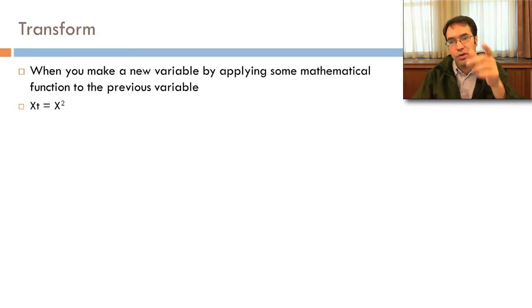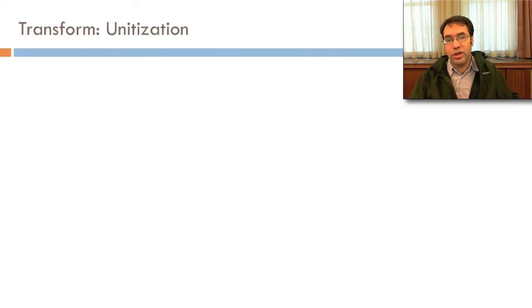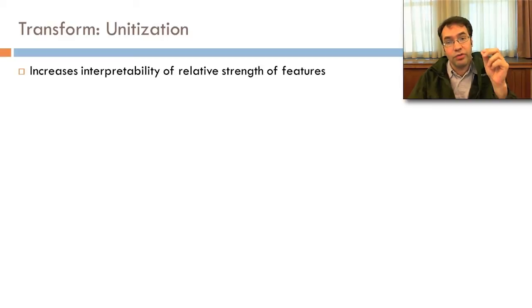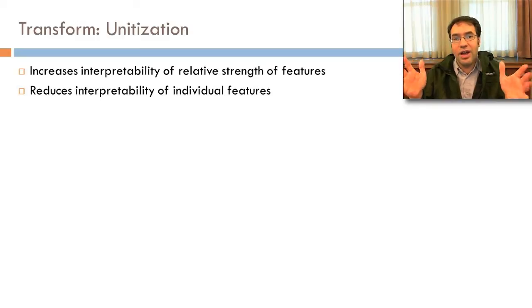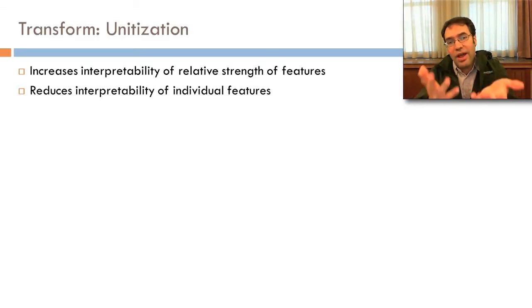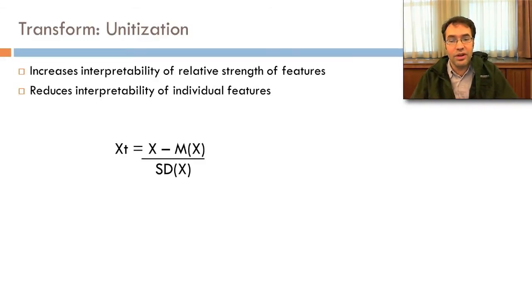A transformation is when you make a new variable by applying some mathematical function to the previous variable. One type of transformation that you might want to use is unitization. It increases the interpretability of the relative strength of features. And it also reduces the interpretability of individual features. It's harder to understand exactly how many seconds is associated with a change in num hints. So it actually makes it a little harder to interpret the individual features. But if you want to compare the features to each other, it's really important. So for unitization, the transformed x is x minus the mean x across all the data points, divided by the standard deviation of x.